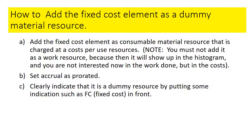Do not add the dummy resource as a work resource, because it will show up as hours in the histogram and you are not interested in hours — you are interested in the cost for a certain task. Set the accrual method to prorated. Clearly indicate in the resource name that it is a dummy resource, for example by prefixing it with 'FC' for fixed cost, such as 'FC Ambulance Service'.